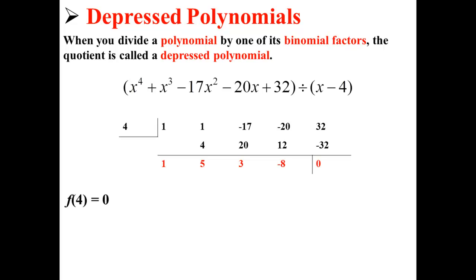That is to say that f of 4, f of our binomial constant, is equal to 0.